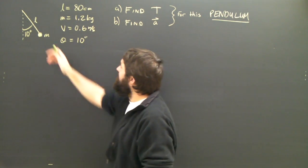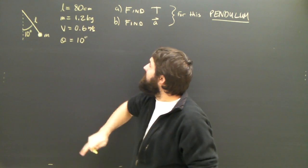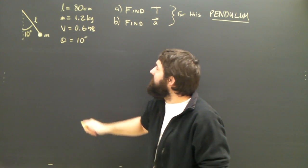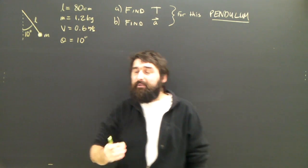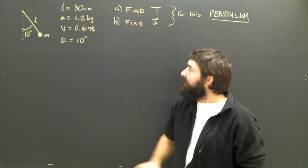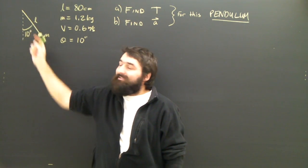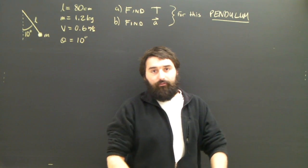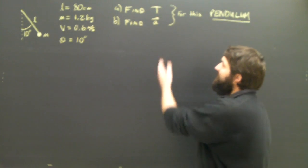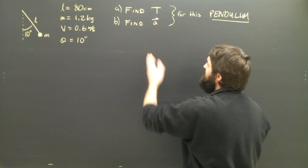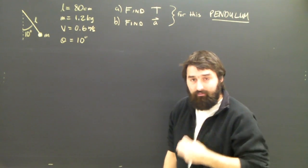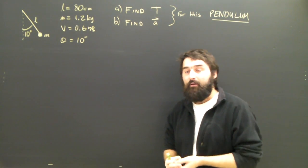The givens are up here. We've got a rope or wire that is 80 centimeters long. The mass is 1.2 kilograms. We know it's going with a speed of 0.6 meters per second, and currently at the moment we're interested in, the rope makes a 10 degree angle with the vertical. What is the tension in the rope? And we find the acceleration of the object, of the mass, of the bulb, of the pendulum.